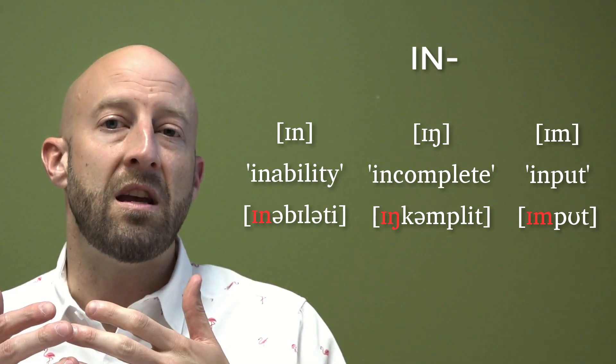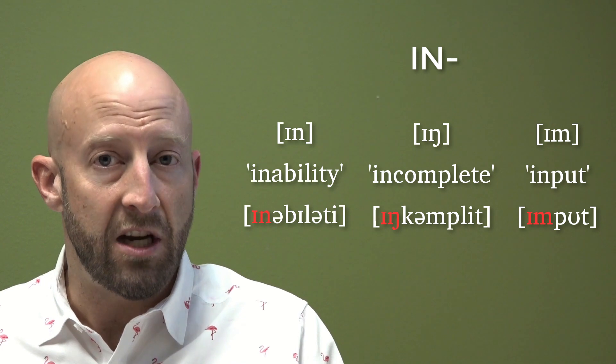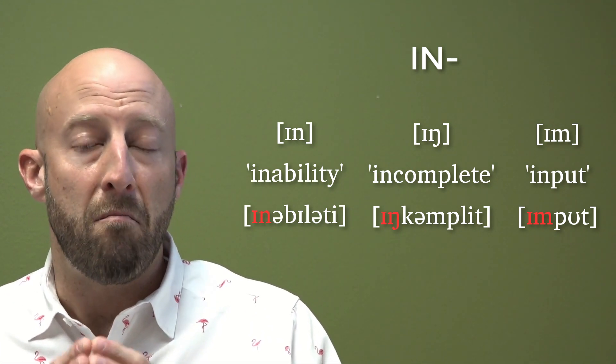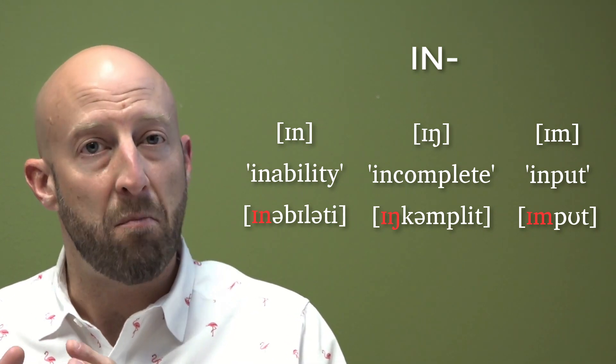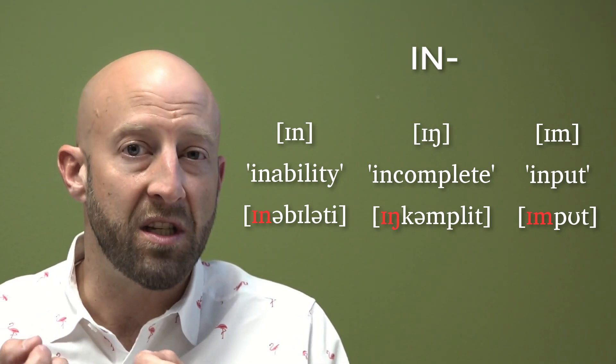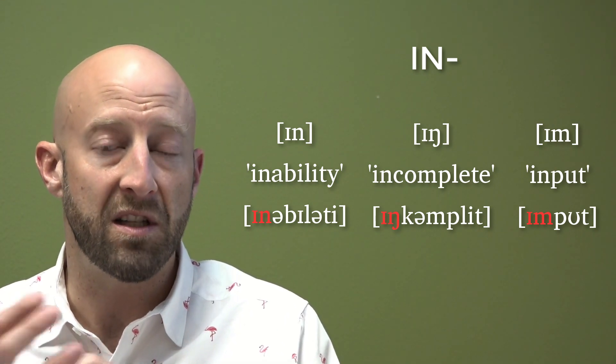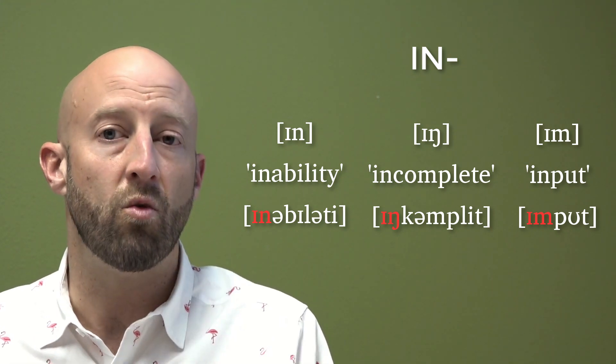So we have three different allomorphs, and just as with the previous cases, they are determined through assimilation, one sound becoming more like its neighboring sound. So this is what I mean when I say that an allomorph is a phonetic realization of a morpheme. There are many ways to pronounce a word, and it really just depends on the sounds that are present in that word and what prefix or suffix you are adding on to the end of it, because it might modify the pronunciation of the word itself.